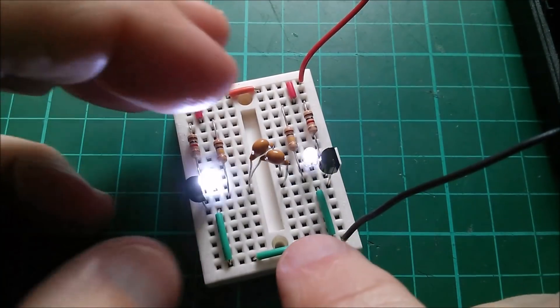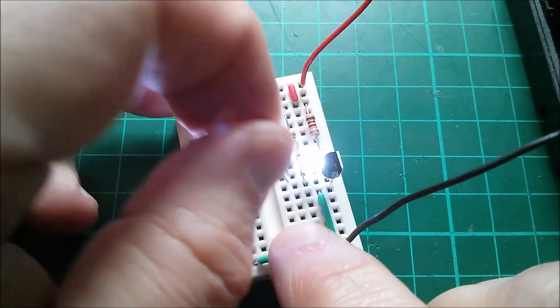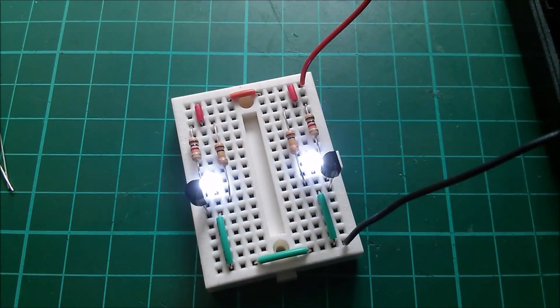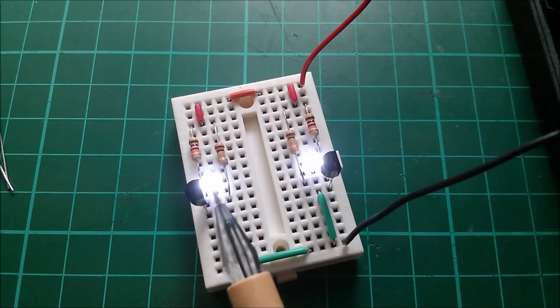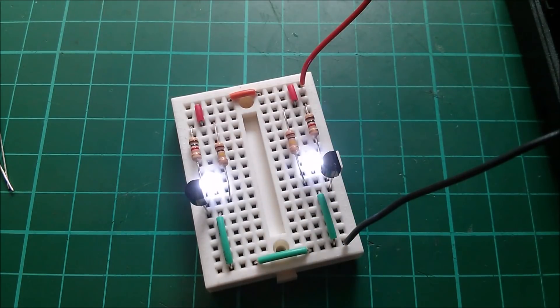Now let's see what happens if I take the capacitors out. So out they come. And all we've got now is two separate transistor LED driver circuits, which I'll draw the schematic of.